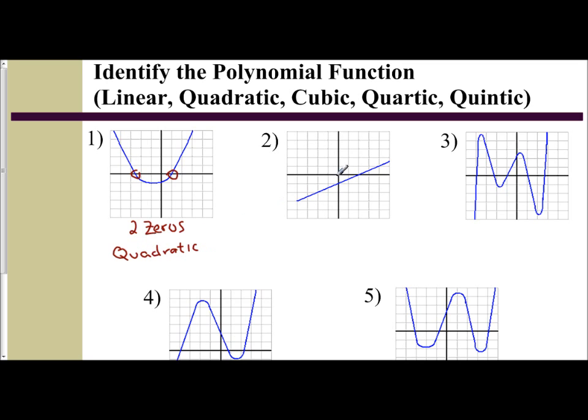I take a look at this example number two. It's a straight line—line means linear. It has one zero, so this is a linear function.